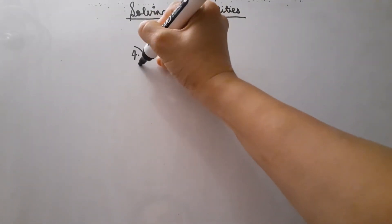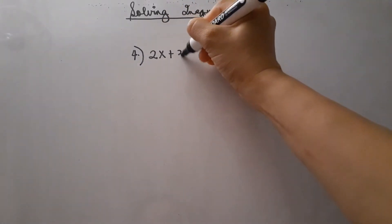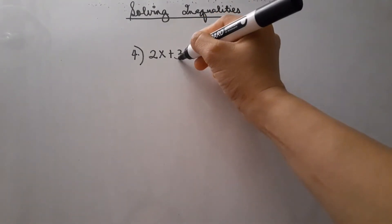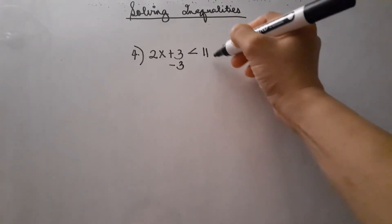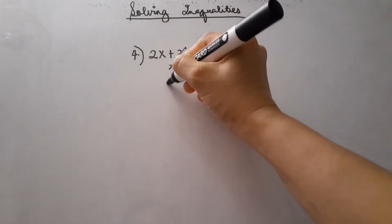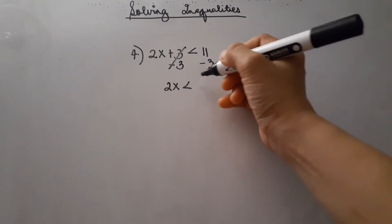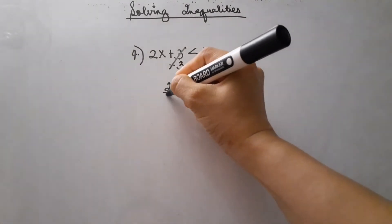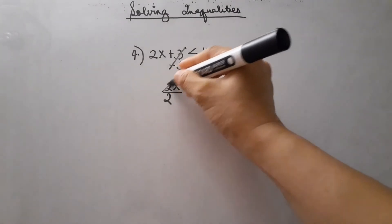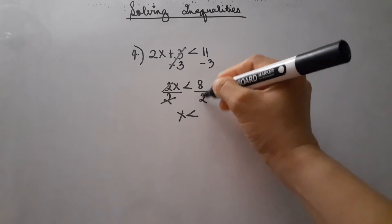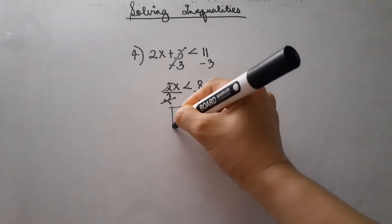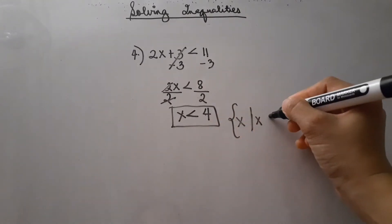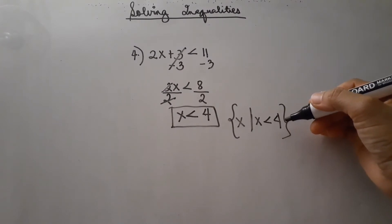Let's have example number 4: 2x plus 3 is less than 11. We subtract 3 from each side of the inequality, so 3 cancels out. The remaining is 2x is less than 11 minus 3, which is 8. We then divide both sides by 2, giving us x is less than 4. The solution set is: the set of x such that x is less than 4. And this is the answer.